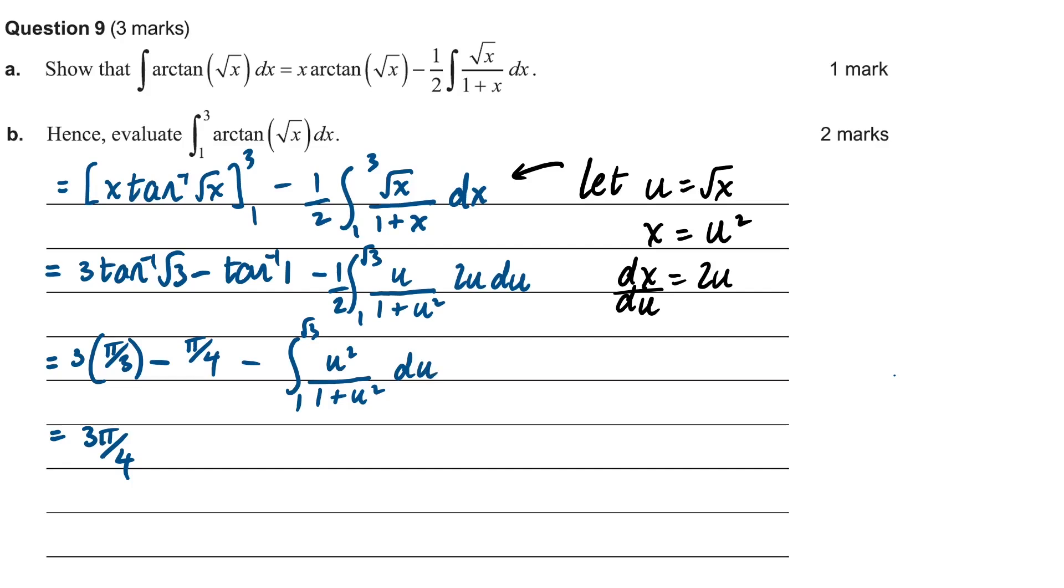Still perhaps not immediately obvious how you're going to integrate that. But what we can do is simplify it using a polynomial division. It becomes 1 minus 1 over 1 plus u squared. Then finally we can integrate it, become u minus inverse tan of u.